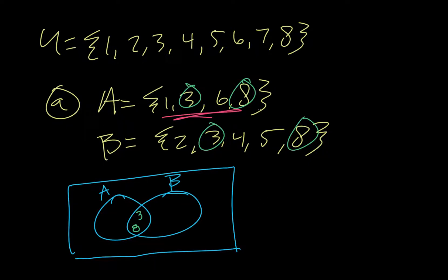Now, the numbers right here. Everything in A that we haven't already used, we write in this section. So, one and six. And, let's see, set B, the numbers we haven't used are two, four, and five.